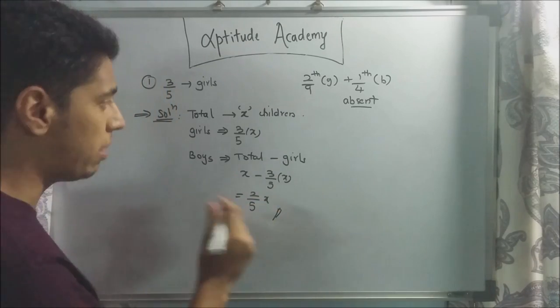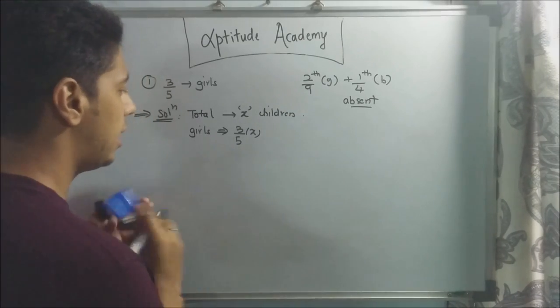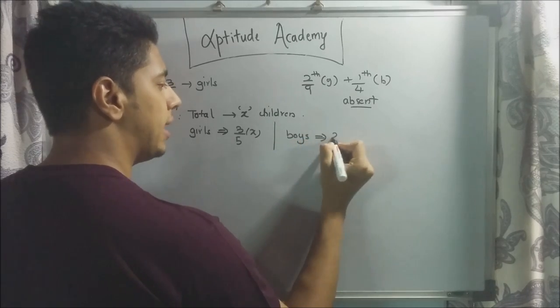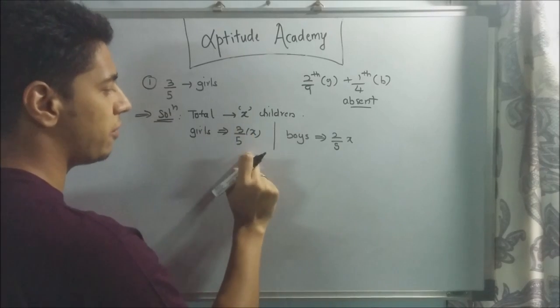I will just erase this out and I will write this down here. Boys, as we just found out, it's 2/5 of x. So 2/5 of the class is boys and 3/5 of the class are girls.